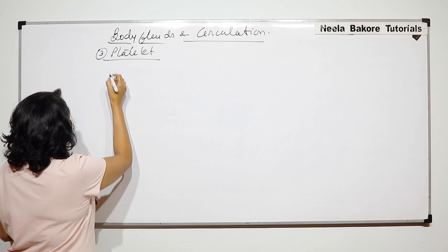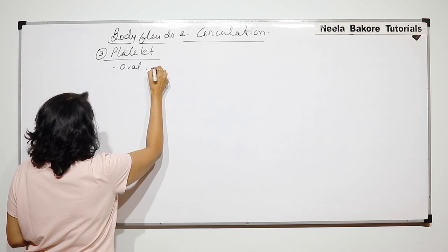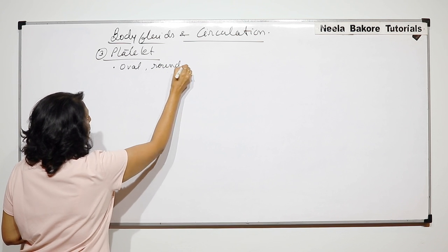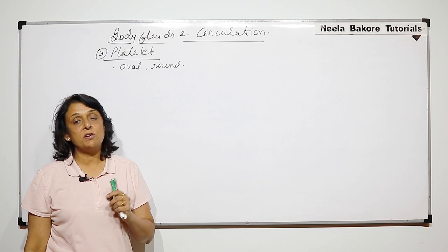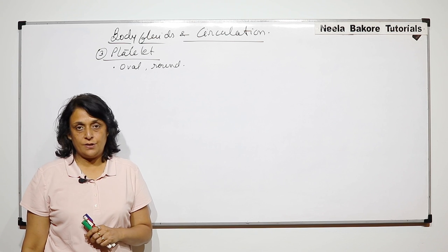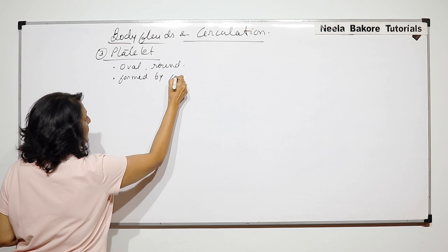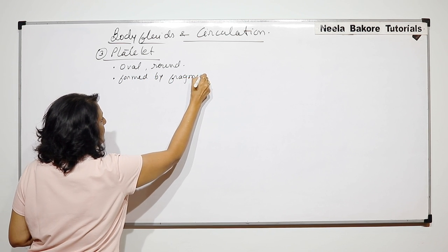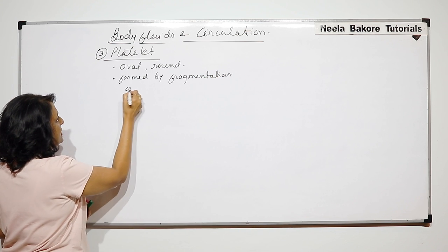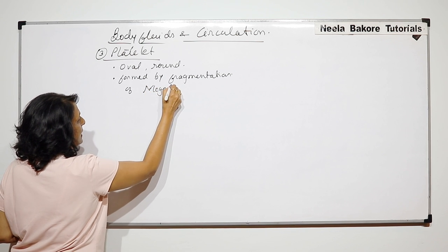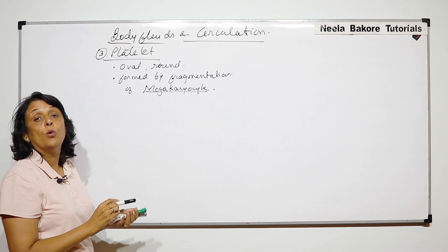The shape of platelets can be oval and slightly round. The reason is that these are made from a special cell in the bone marrow called megakaryocyte, formed by fragmentation. Fragmentation means that one part is separated. The cell is megakaryocyte, and this megakaryocyte is in the bone marrow.